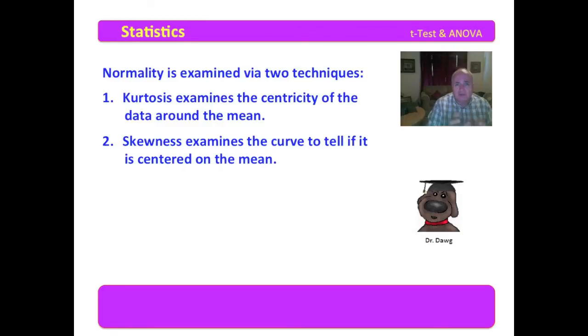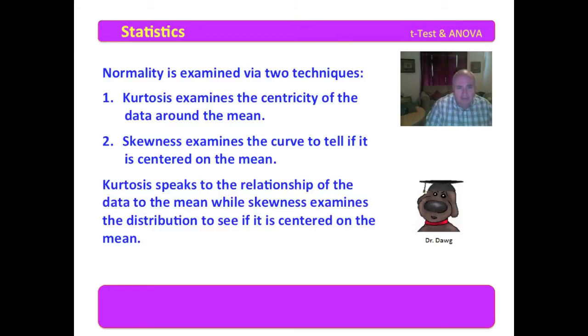Skewness examines the curve to tell if the curve is centered on the mean. Is it left shifted or is it right shifted? Now kurtosis speaks to the relationship of the data to the mean, while skewness examines the distribution to see if it is centered on the mean.